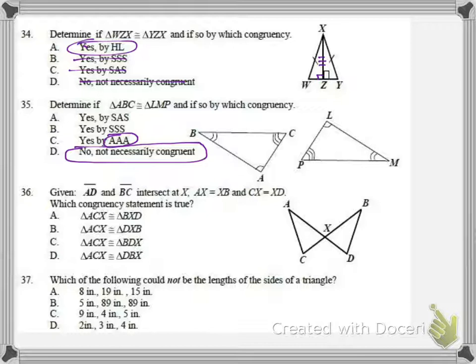For number 36, we have that AD and BC intersect. AX, XB are the same. CX, XD are the same. So how are they congruent? We get two pairs, or a pair of vertical angles at X. So if we're looking at it, we could say it's side angle side.